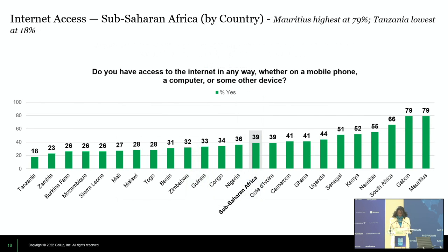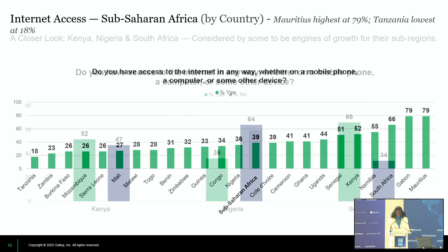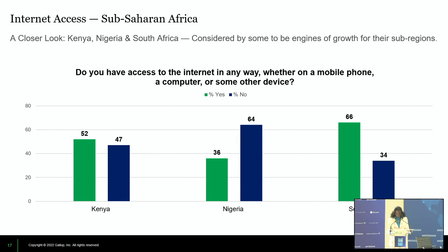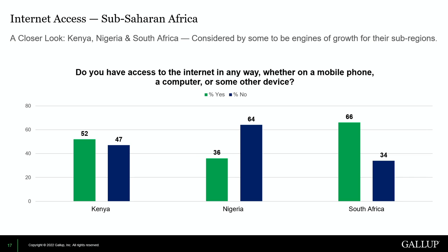The bi-country slide shows Mauritius has the highest connectivity and Tanzania the lowest. I also broke down some countries considered engines of growth for their sub-regions: Kenya, Nigeria, and South Africa. Even though these are the engine-of-growth countries, they still face serious challenges with connectivity and access on a daily basis — despite having a strong economic framework.